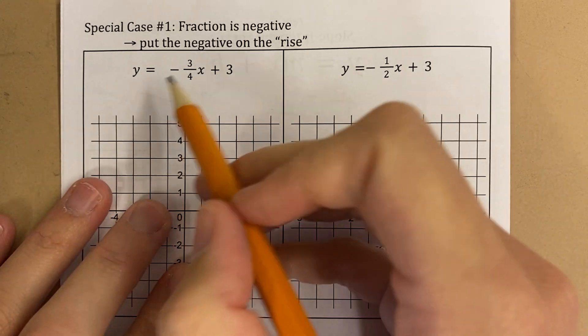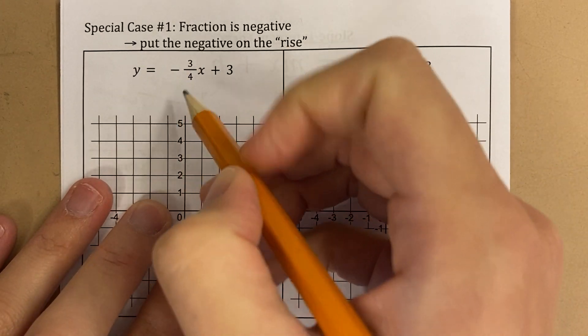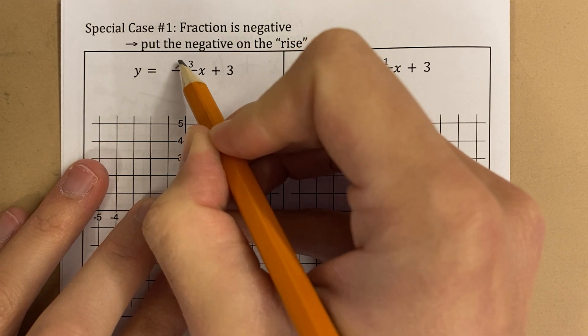Okay, in that case what we do, for right now, there's actually some special cases where we don't do this, but for right now we're just going to take that negative and attach it to the rise.